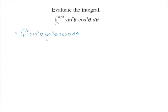Remembering that sine squared plus cosine squared equals 1, we manipulate that to substitute in for cosine squared — and it'll be cosine squared, squared, because this is the fourth power. So this equals the integral from 0 to π/2 of sine to the seventh theta times (1 minus sine squared theta) squared times cosine theta dθ.